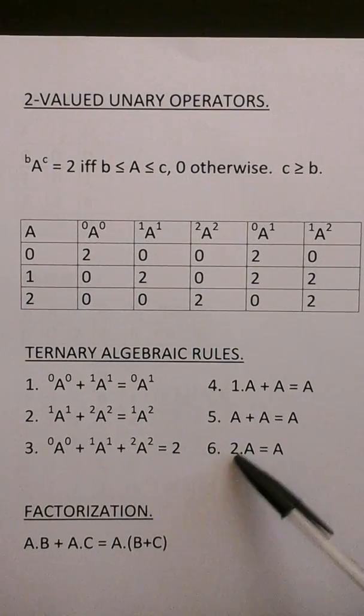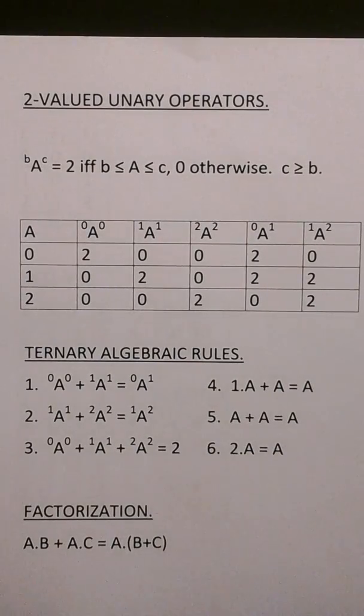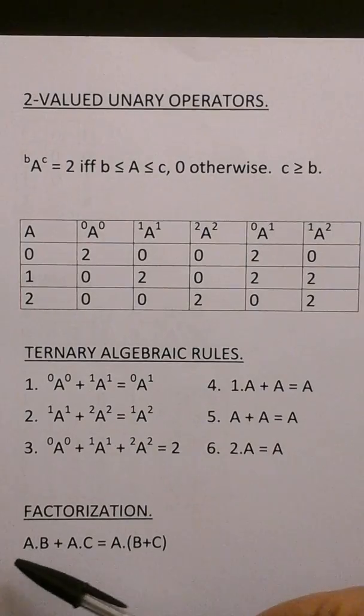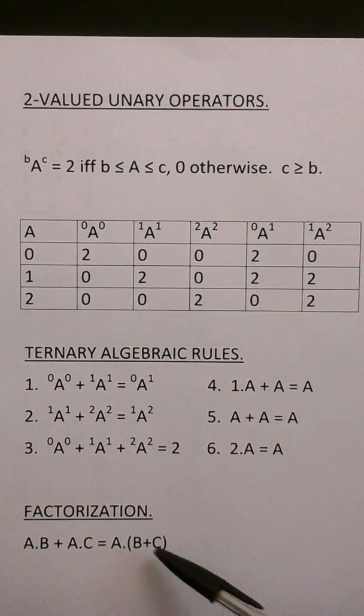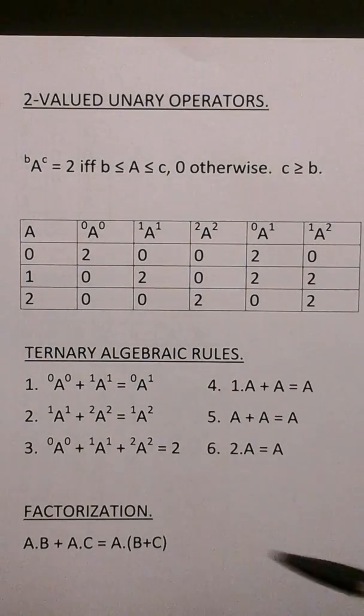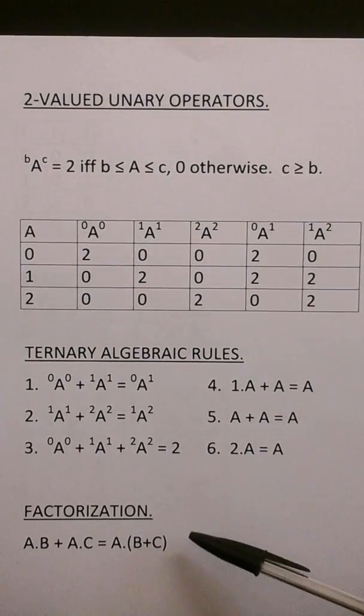A max A equals A. 2 min A equals A. Of course we have the factorization. A min B max A min C equals A min B max C. That's similar to Boolean algebra factorization.